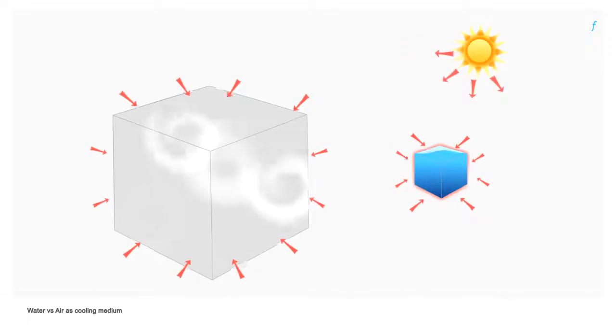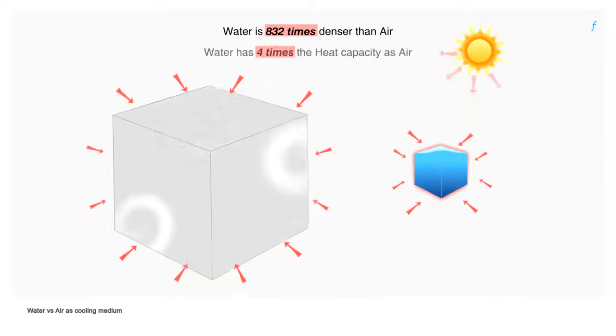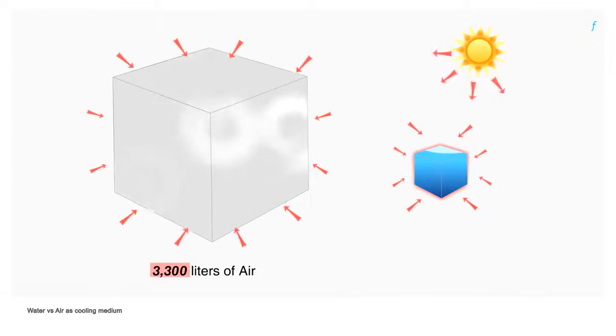Water is 832 times denser than air and has approximately 4 times the heat capacity as air. Effectively, one must circulate 3300 liters of air as opposed to 1 liter of water to absorb the same amount of heat.